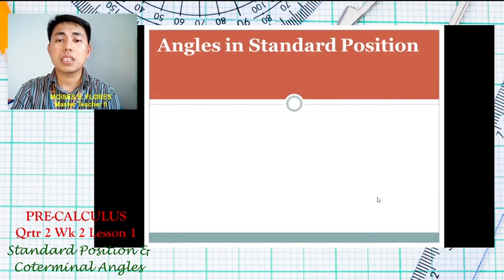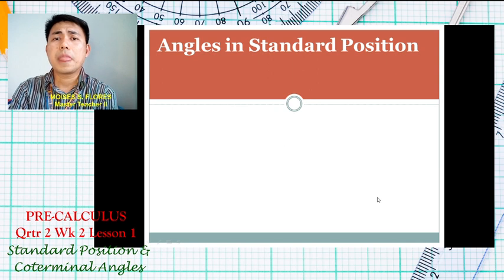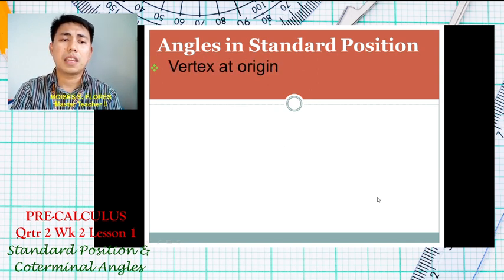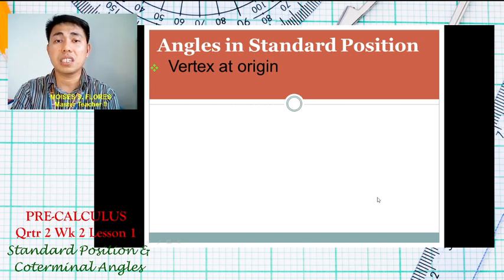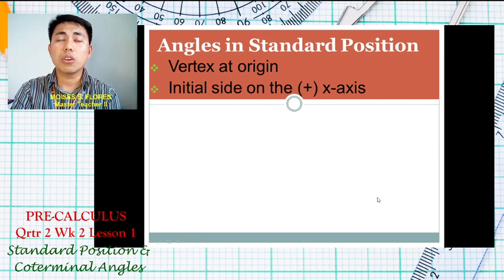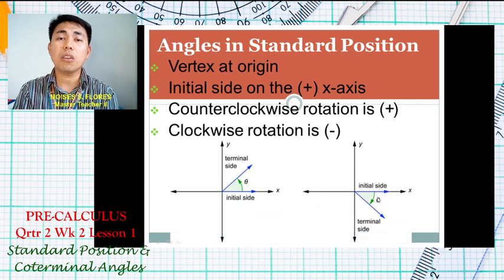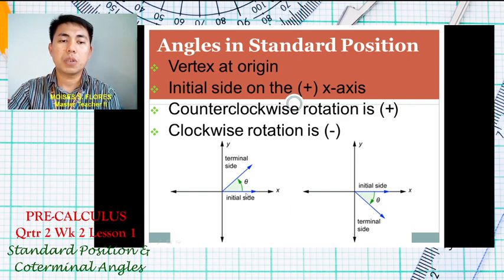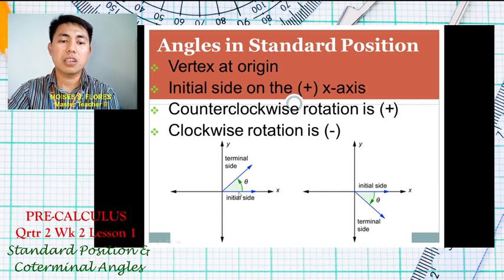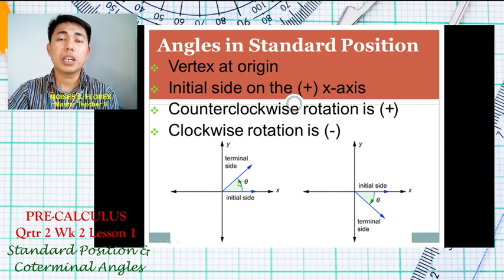Now let's look at angles in standard position. When we say angles in standard position, the vertex should always be at the origin, and the initial side should always be on the positive x-axis. Evaluating our diagram, we have the initial side on the positive x-axis, the vertex at the origin, and the angle moving in a counterclockwise direction.